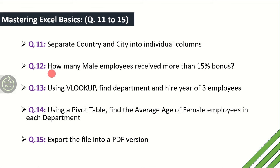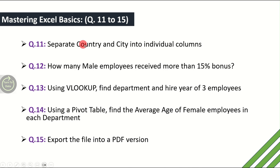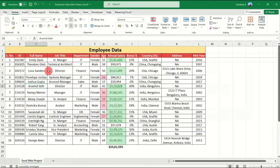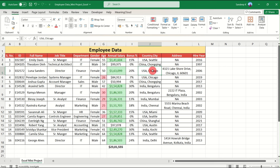Question number 11: separate Country and City into individual columns. We have a column called 'Country, City' where the country and city are separated by a comma — for example, India, Mumbai or India, Chennai. We need to split these into two separate columns.